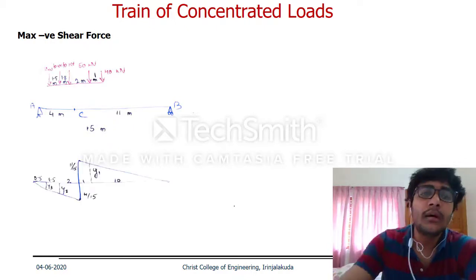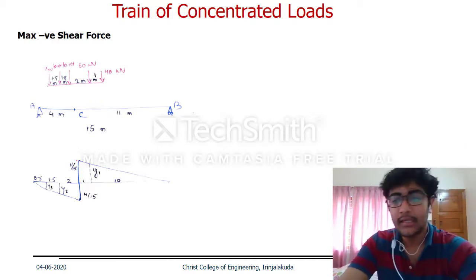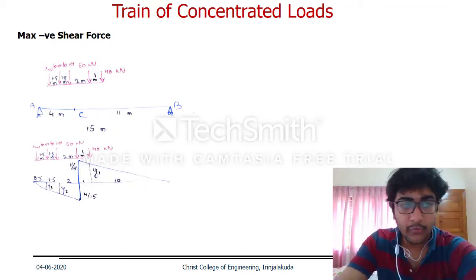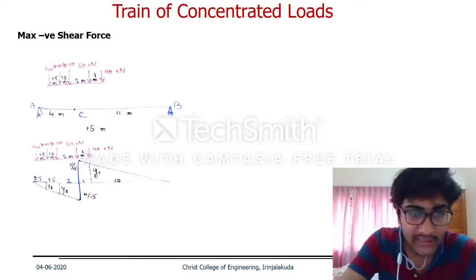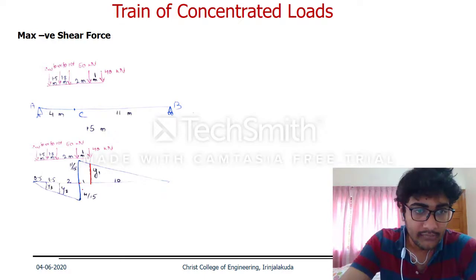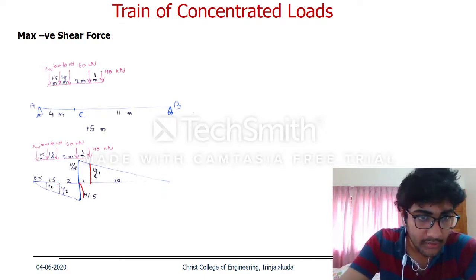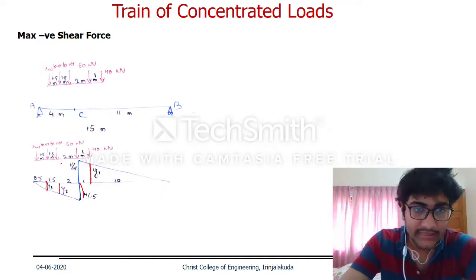Now for the second case using trial and error, assume the 50 kN load is at section C. The 40 kN load is in the front, and this is the first load on the positive portion. The corresponding ordinate would be positive.